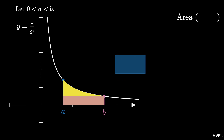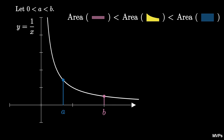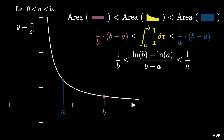Therefore, the area of the rectangle with height 1 over a is greater than the area under the curve, which in turn is greater than the area of the rectangle of height 1 over b. The area of this rectangle is 1 over b times b minus a, the area under the curve is the integral from a to b of 1 over x, and the area of the large rectangle is 1 over a times b minus a. Applying the fundamental theorem of calculus to the integral gives us the natural log of b minus the natural log of a. Dividing each term in the inequality by the positive value b minus a results in the inequality 1 over b is less than the natural log of b minus the natural log of a over b minus a, which is less than 1 over a. This, again, is Napier's Inequality.